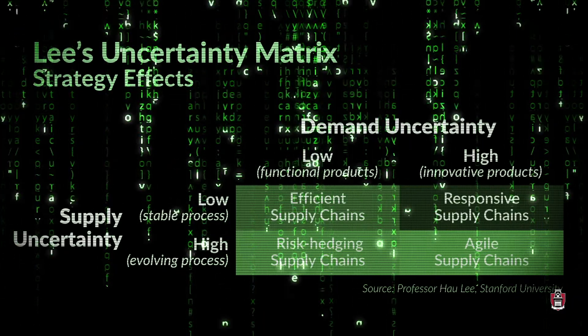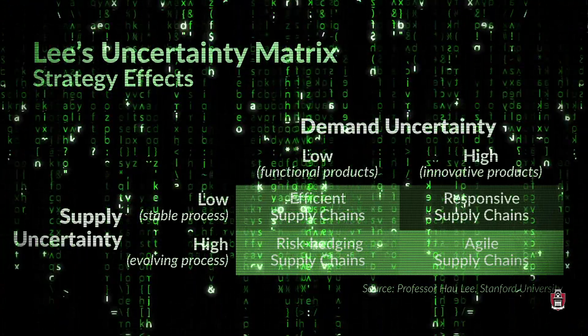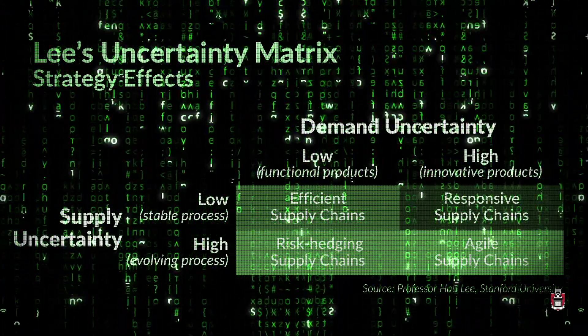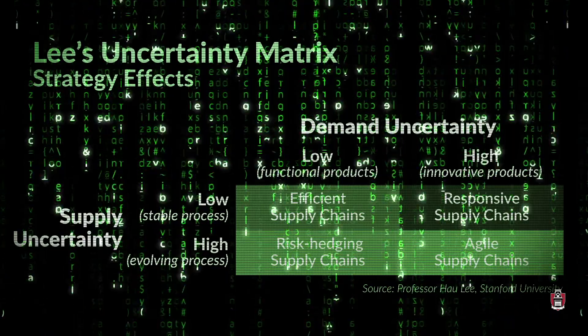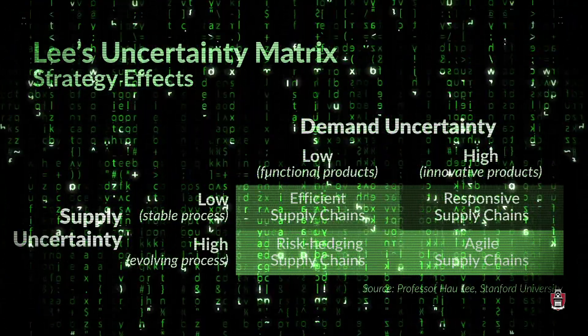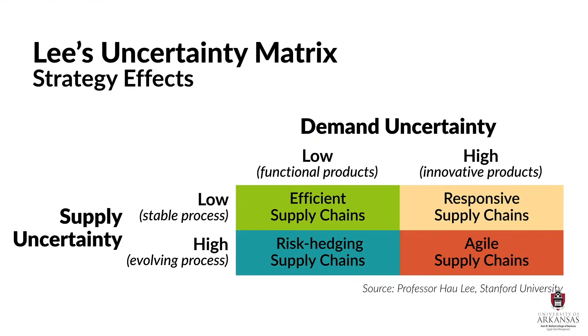On the other hand, if you understand that firms can have multiple products with various segments, each with unique supply and demand characteristics that require hybrid supply chain strategies, then the matrix becomes reality.